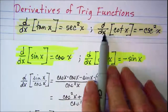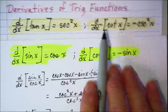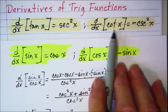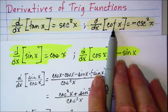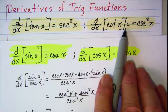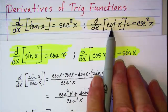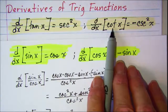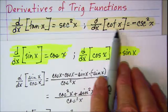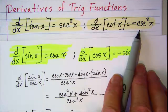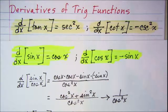We can also develop the derivative for cotangent in a similar way. We rewrite cotangent x as cosine over sine, and it works out to be negative cosecant squared.